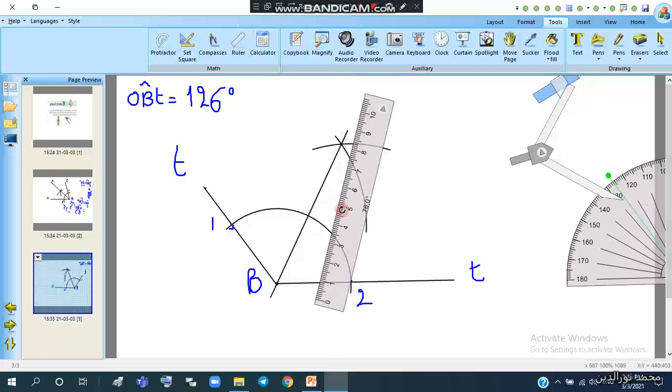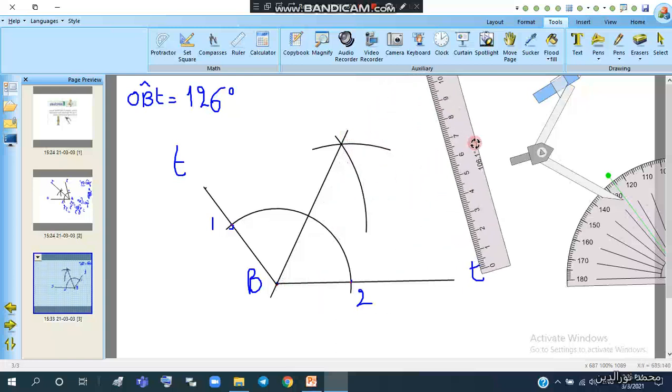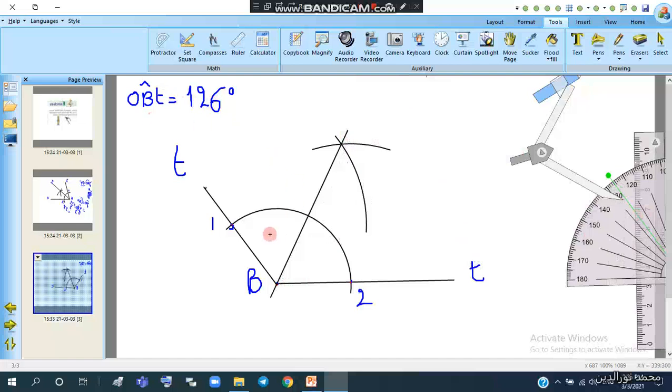What we just drew is the bisector of the angle. To confirm the accuracy, we'll calculate one of these two angles. We can name it BI. The angle OBI equals angle IBO, and it's half of OBT, which is 126 over 2.